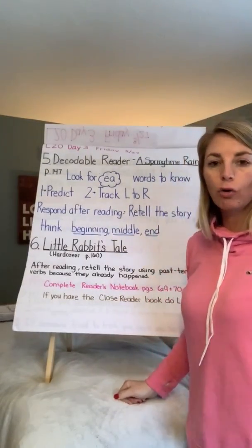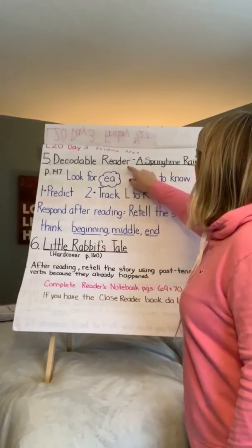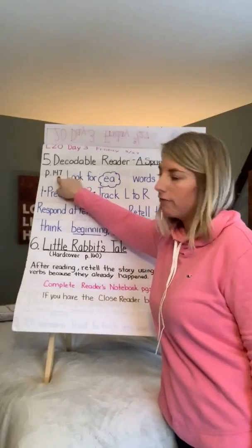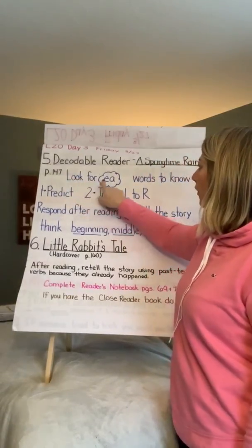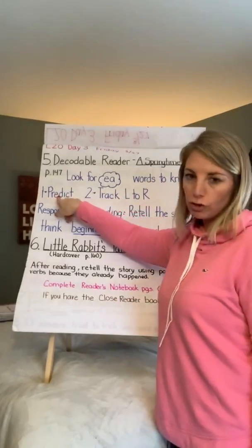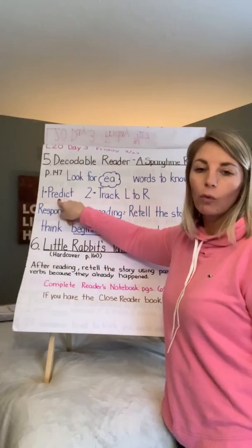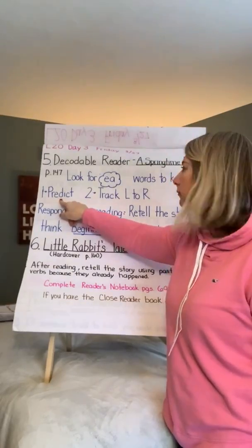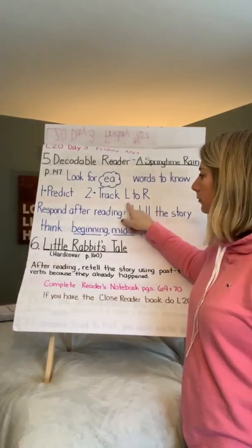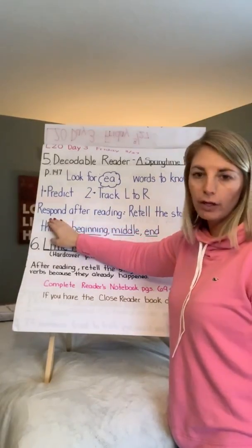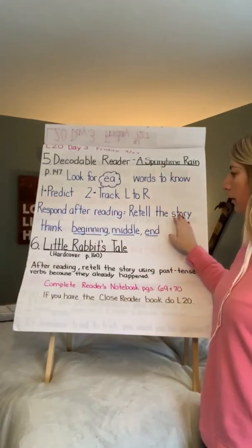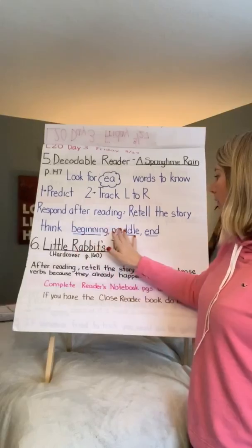We're going to move on to our decodable reader, 'A Springtime Rain,' starting on page 147. You're going to look for the E-A words and words to know. From the cover page, I want you to predict — what do you think is going to happen in the story? Make sure you are tracking from left to right. After you read the story, respond orally by telling somebody about the story. Think about the beginning, the middle, and the end.